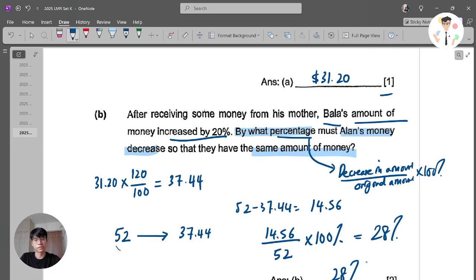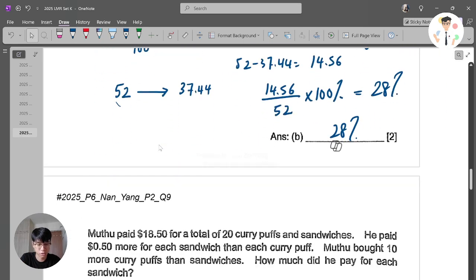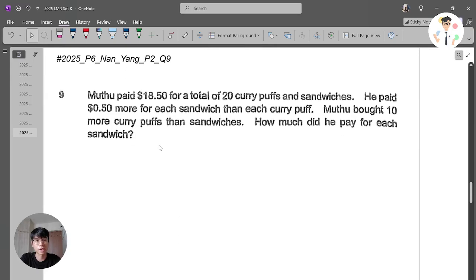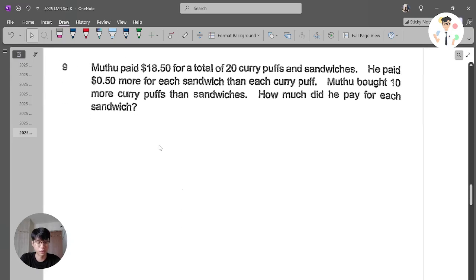What's my decrease in amount? 52 minus 37.44, which is 14.56. And 14.56 divided by my original amount which is 52 and times 100%, you should get 28%. That is the amount that you have to decrease so that you have the same amount of money as Bala after receiving the money from his mother. Not very difficult but it requires your knowledge on this percentage decrease.